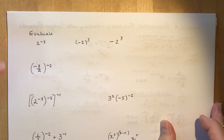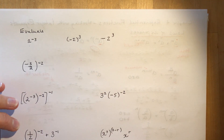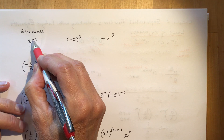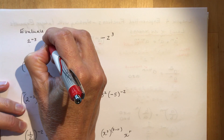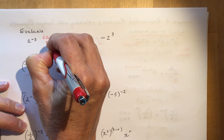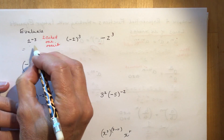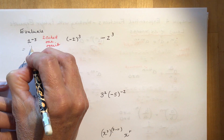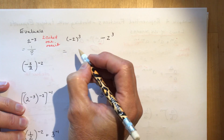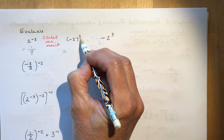Let's do some examples. Two to the negative three: I say two cubed, one over it. Two cubed is eight, the negative means one over that number, so I get one over eight.